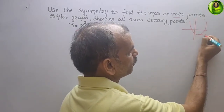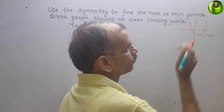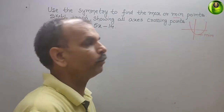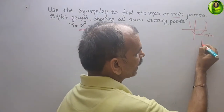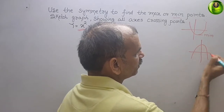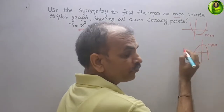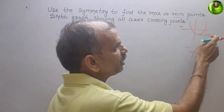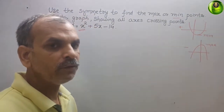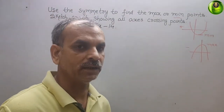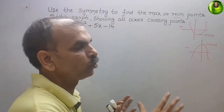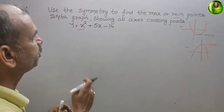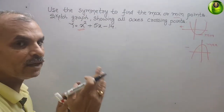So the graph will look like this — this is your minimum point. If the coefficient is negative, you will get the other form — a maximum. If the coefficient is negative you get a maximum; if it is positive you get a minimum point. We will solve this by the completing the square method — always use this method for this type of question.